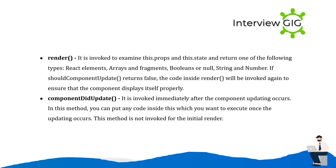render() is invoked to examine this.props and this.state and return one of the following types: React elements, arrays and fragments, booleans or null, or string and number. If shouldComponentUpdate returns false, the code inside render will be invoked again to ensure the component displays itself properly. componentDidUpdate is invoked immediately after the component updating occurs. In this method, you can put any code you want to execute once the updating occurs. This method is not invoked for the initial render.